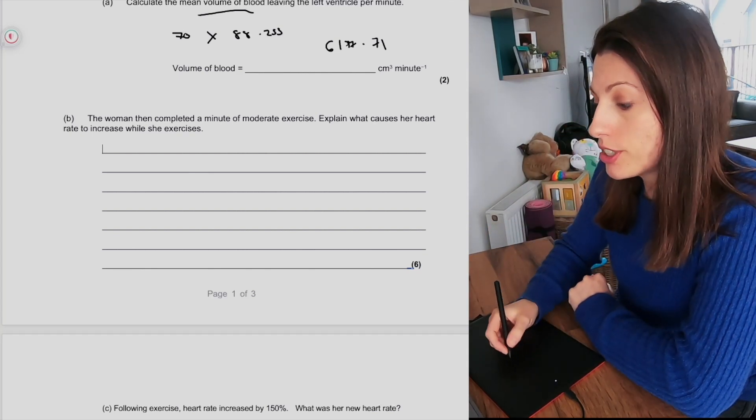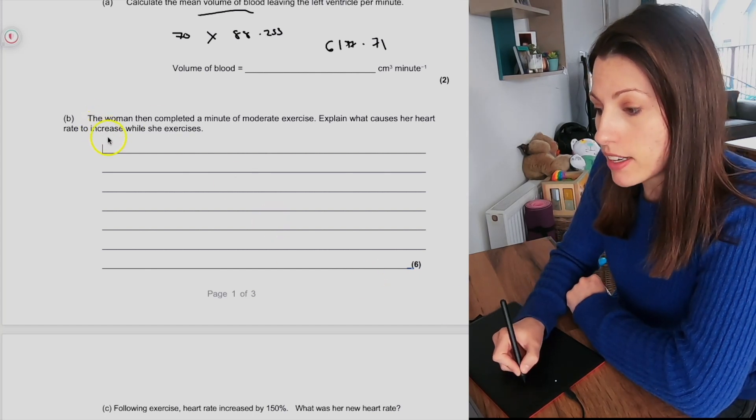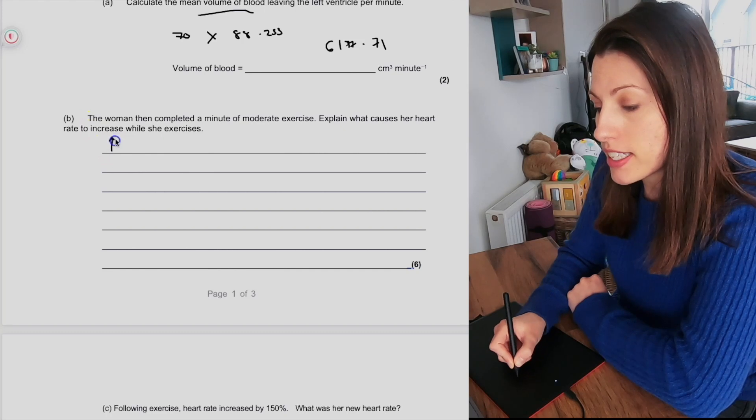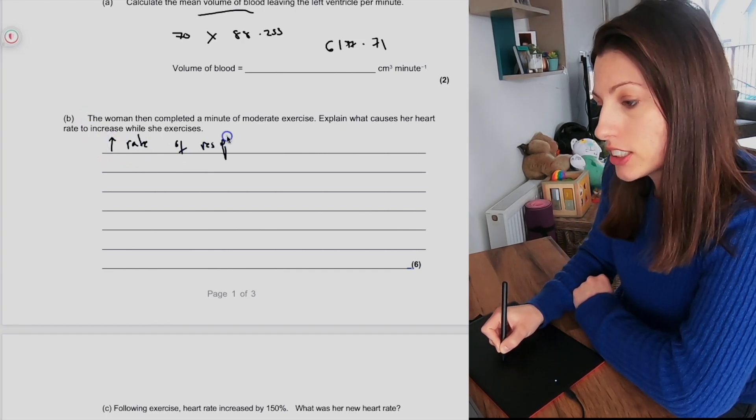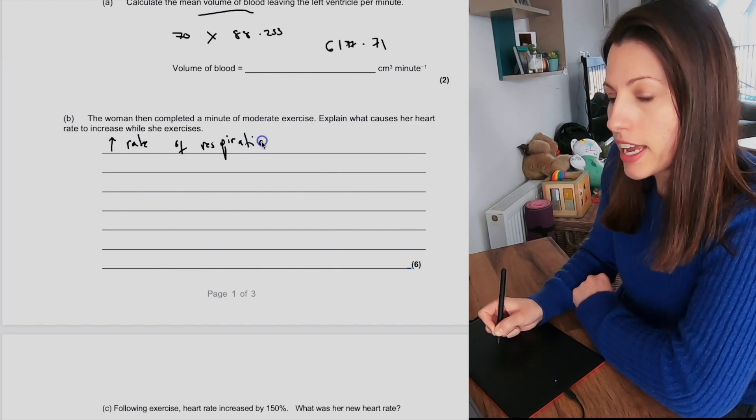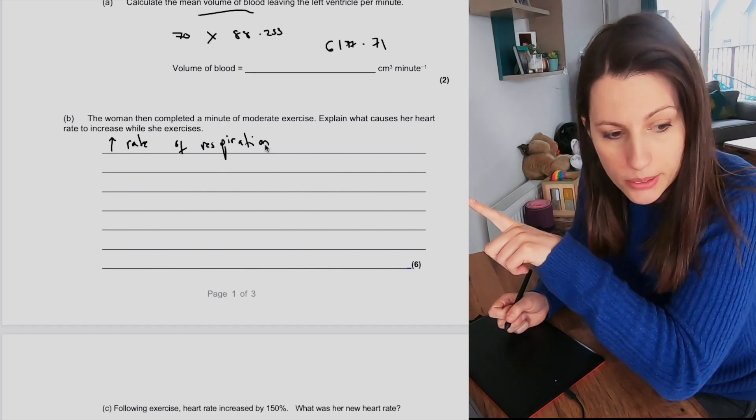So the first thing to note is that if she is doing exercise, there's going to be an increase in the rate of respiration. Now I've actually done that shorthand with an upwards arrowhead, but you would have to write the whole thing in the exam. That would be your first mark.